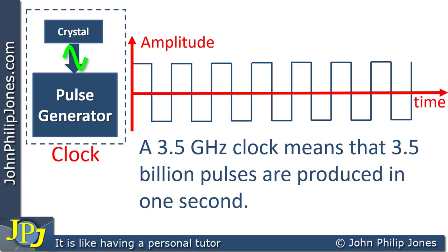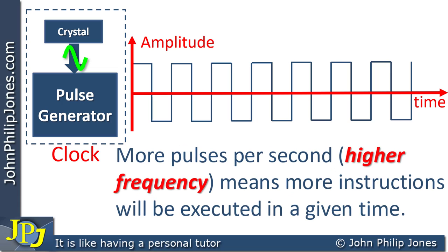So the computer can actually perform 3.5 billion steps in one second. Now that's one heck of a lot of steps. And of course, a 3.5 gigahertz clock is not one of the highest clock frequencies you can get. There are even higher clock speeds than this. So an important takeaway from this video is more pulses per second, i.e. higher frequency, means more instructions will be executed in a given time. So the frequency of the pulses produced by a clock does have an effect on the overall performance of the computer systems that you use.